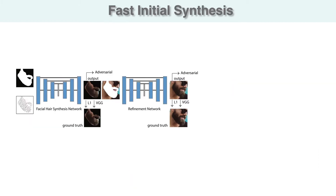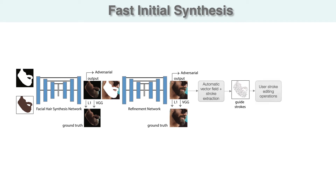As our image synthesis framework allows for any 2D color input, we extend our approach to allow for the creation of a fast initial estimate of the target hairstyle. We do so by training a separate set of networks to synthesize the target image from a color mask defining the shape and average color of the synthesized region. We can then extract a vector field and corresponding guide strokes from this initial estimate, which can then be edited by the user to allow for refinement before performing the final image synthesis.